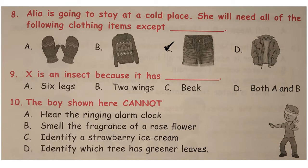Question number 9: X is an insect because it has dash. The correct option is A because all insects have 6 legs.